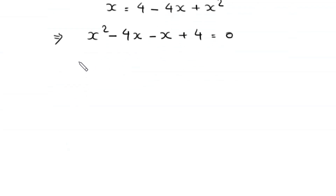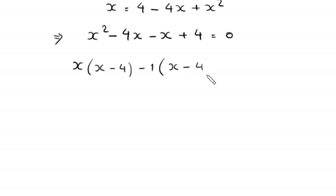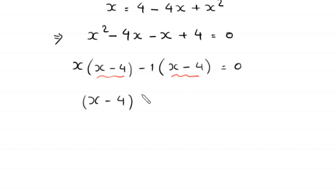From the first two terms we can factor out x, giving x(x minus 4), and from the last two terms we factor out negative 1, giving negative 1(x minus 4), which equals 0. Since (x minus 4) is a common factor, we factor it out, leaving (x minus 4)(x minus 1) equals 0.